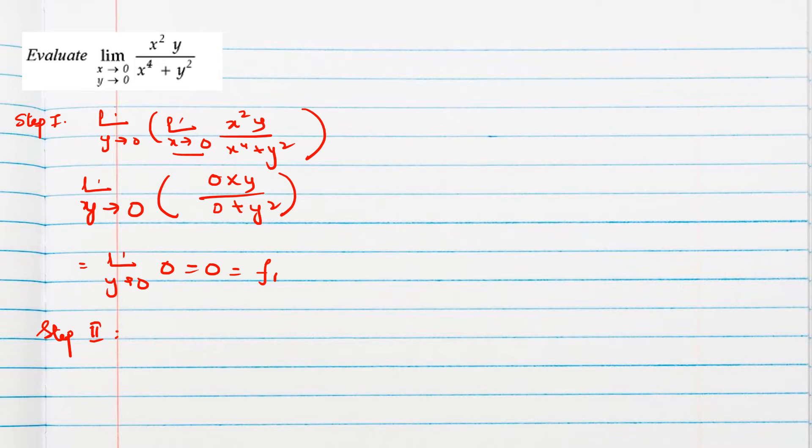So that means at the place of y we should put 0, x will remain same. So here also you can see 0 into x square will be 0. The denominator will give final answer 0. Let it be f2.